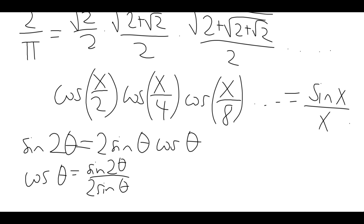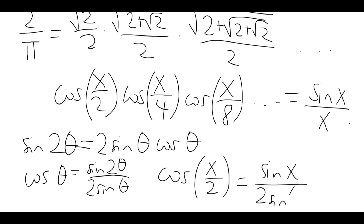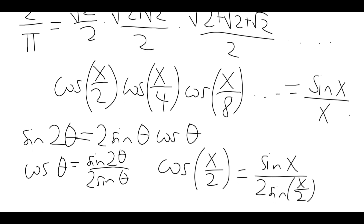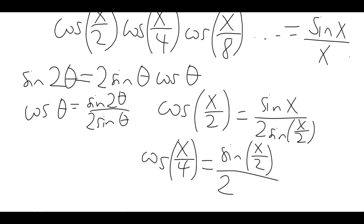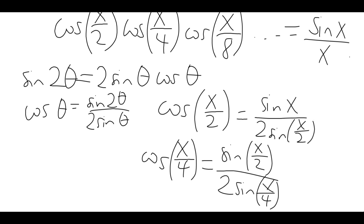If we plug in θ equals x over 2, we get cosine x over 2 equals sine x over 2 sine x over 2. That doesn't look too special, but when we plug in x over 4, we get some of the same terms: cosine x over 4 equals sine x over 2, over 2 sine x over 4. When we multiply these two equations, the sine x over 2's cancel, and we get sine x over sine x over 4. And we keep doing this.